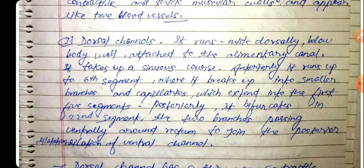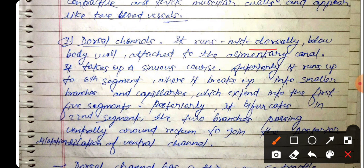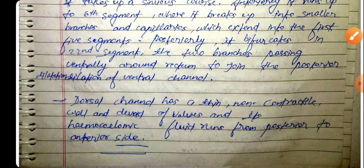The dorsal channel runs mid-dorsally below the body wall, attached to the alimentary canal. It takes a sinuous course and runs up to six segments where it breaks up into similar branches and capillaries. Anteriorly it extends into the first five segments, and posteriorly it bifurcates in the 22nd segment, with two branches passing ventrally dorsal to the rectum to join the posterior lateral channels.